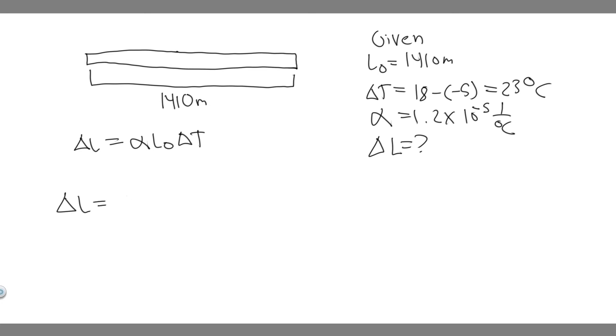So we have delta L equals alpha, which is 1.2 times 10 to the minus 5, multiplied by the initial length, which is 1,410. And then we do the change in temperature, which we said was 23.